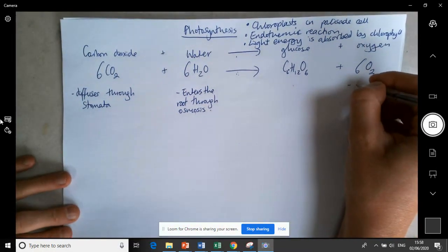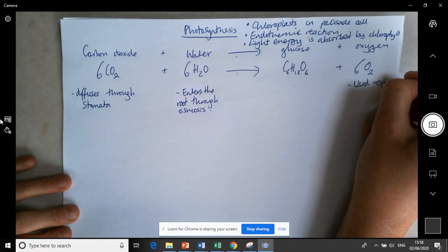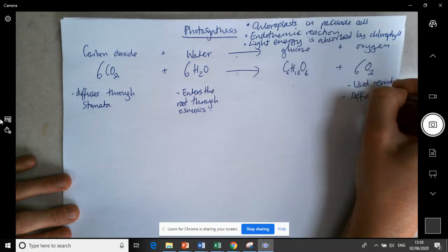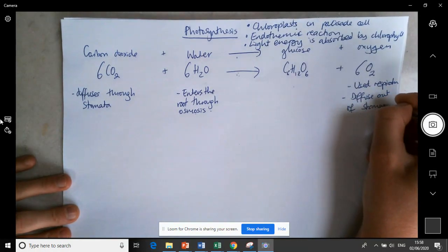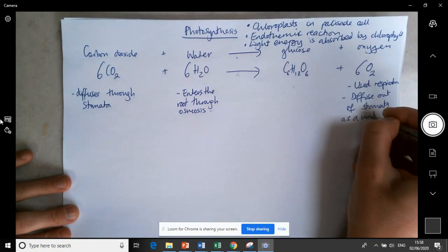They're going to react using light energy and we're going to create glucose and oxygen. And the oxygen is either going to be used in respiration or it's just going to diffuse out of the stomata as a waste product, and we then eventually breathe that in.